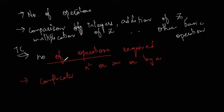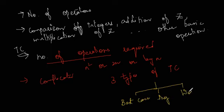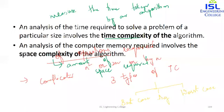When talking about time complexity, there are basically three types: best case, average case, and worst case complexity.